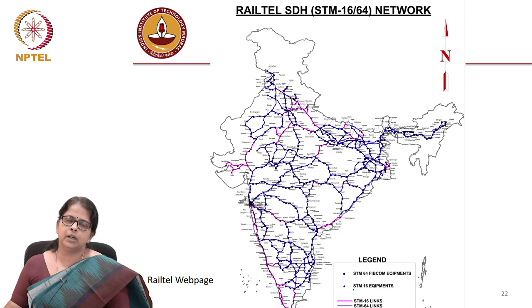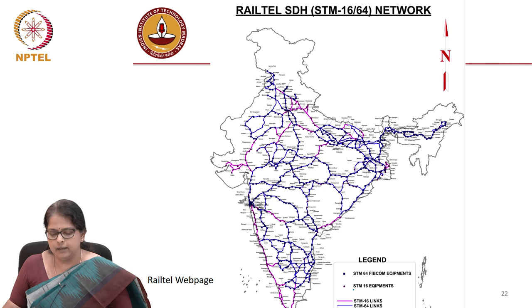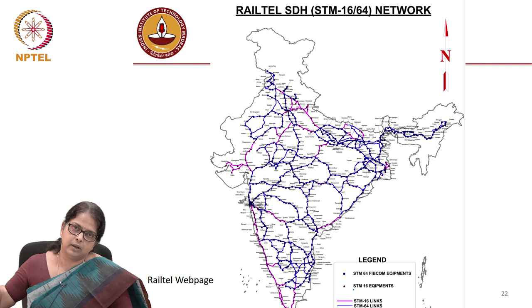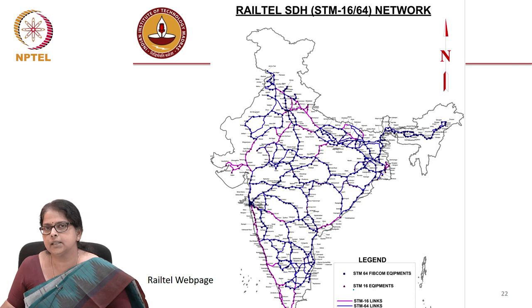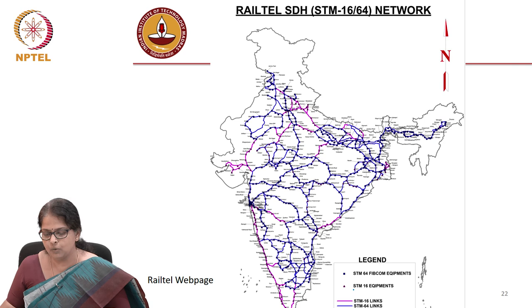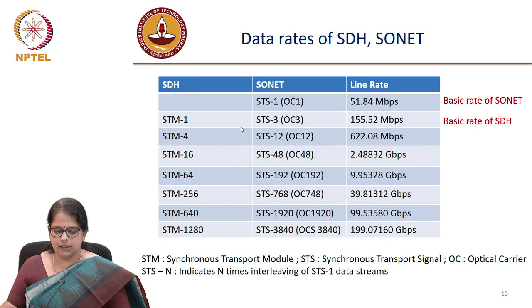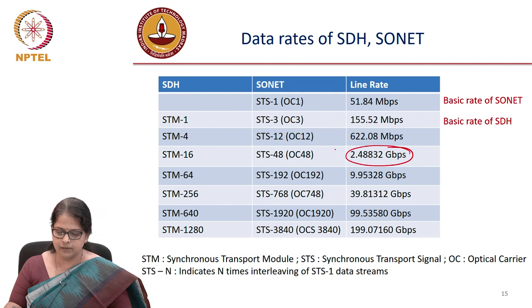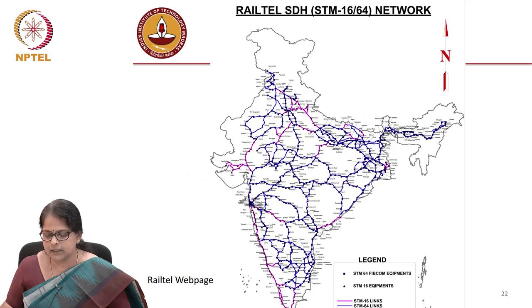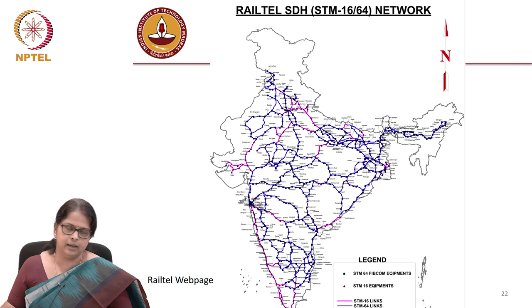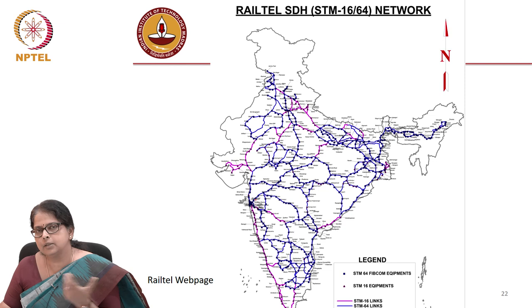Just to give an example of what data rate is laid in India: this is an example from the RailTel webpage. RailTel is one of those laying the networks. Their SDH is at SDH-16 and SDH-64. The links already laid across India are shown here. SDH-64 is shown in blue and SDH-16 is shown in pink, and we see that the blue lines are much more than the pink lines. SDH-16 is at 2.4 Gbps and SDH-64 is at 10 Gbps, which makes it clear that most of India is connected with a 10 Gbps line in the RailTel network. RailTel is not the only network in India — this data was taken as an example because it was available on their webpage.